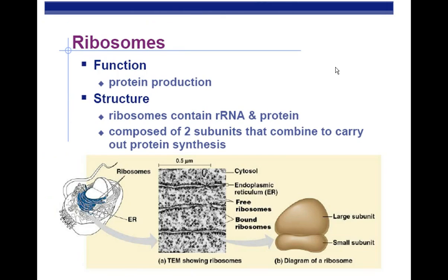Just a quick review. Remember that ribosomes are involved with protein making, and today you're going to learn a little bit about how that happens. Ribosomes will chain together amino acids in a sequence that will eventually fold into a three-dimensional protein, and these proteins are important for a lot of different things. Ribosomes are found in both prokaryotes as well as eukaryotes. All living things have ribosomes because all living things use proteins to carry out chemical reactions within the cell.